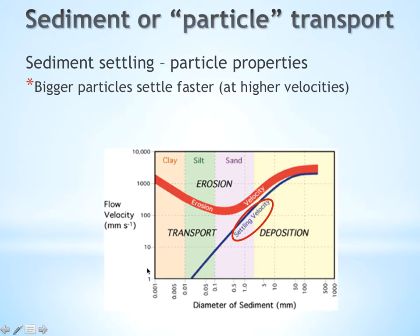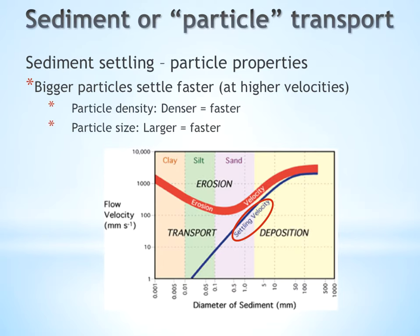This figure shows flow velocity on the y-axis and sediment diameter on the x-axis. Focus on the blue line, which represents settling velocity — the velocity at which a particle of any size falls out of the water column or settles to the bottom of a river. A big, heavy particle will settle at a much higher velocity than something much smaller, like a particle of silt, which requires a really slow water velocity before it settles. Bigger and denser particles settle at higher velocities.